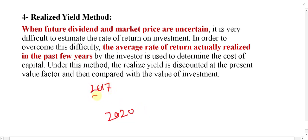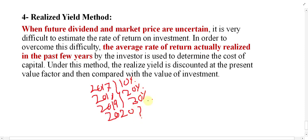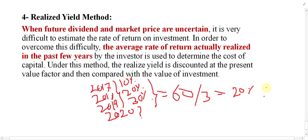You look at how much was the cost of equity for 2017, 2018, and 2019 — usually taking the average of three years. For example, if the cost was 10% one year, 20% the next, and 30% the year after, you take the average: 10 + 20 + 30 = 60, divided by 3 years, which gives 20%. On an average basis, the cost of capital will be 20%.